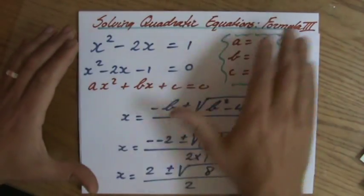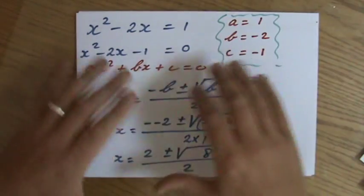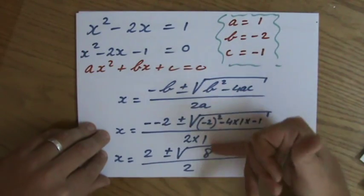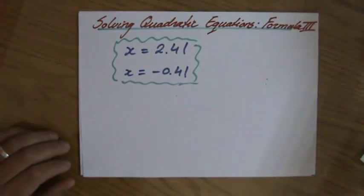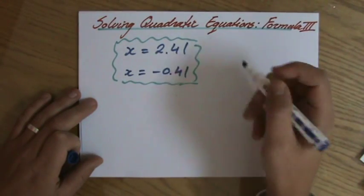We have solved the quadratic equation by using the ABC formula. So please have a look at my previous video where actually we have done all these steps. Then we found the answers 2.41 and minus 0.41.